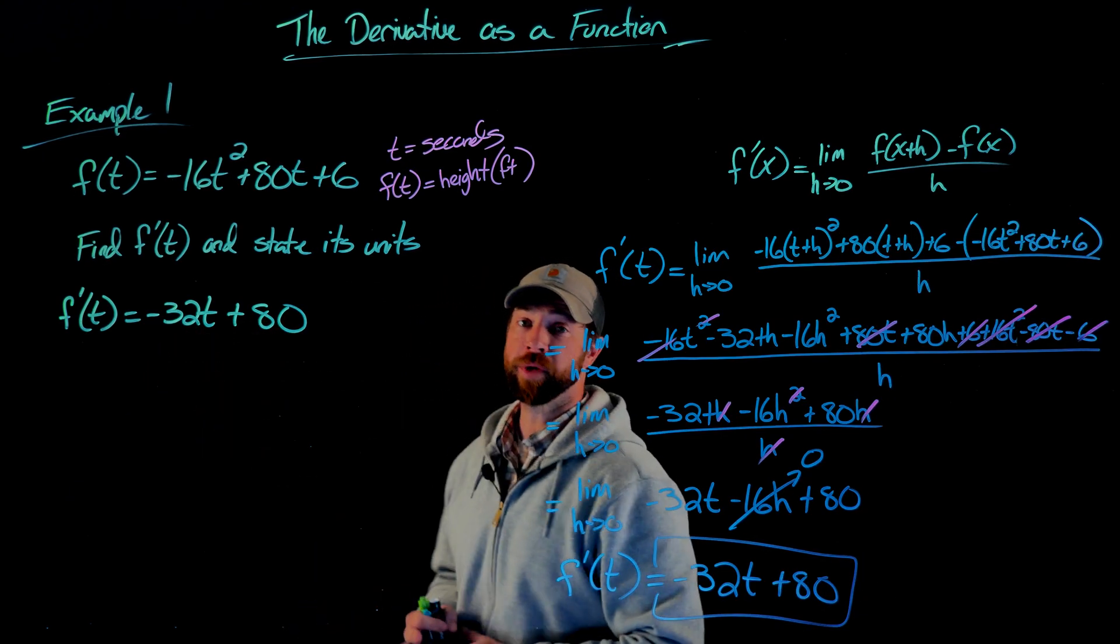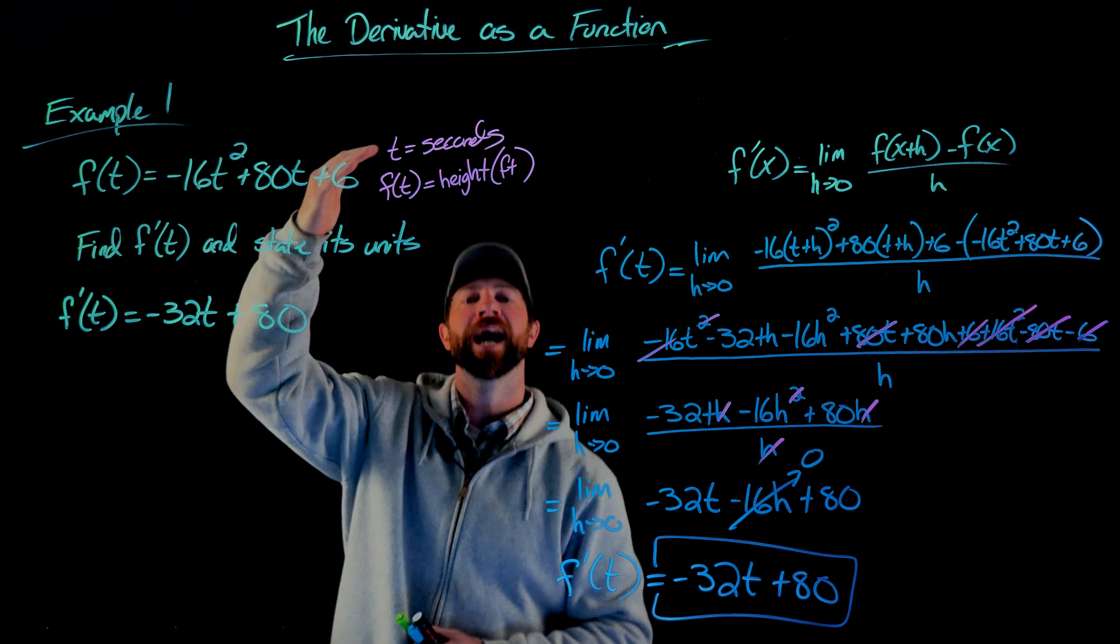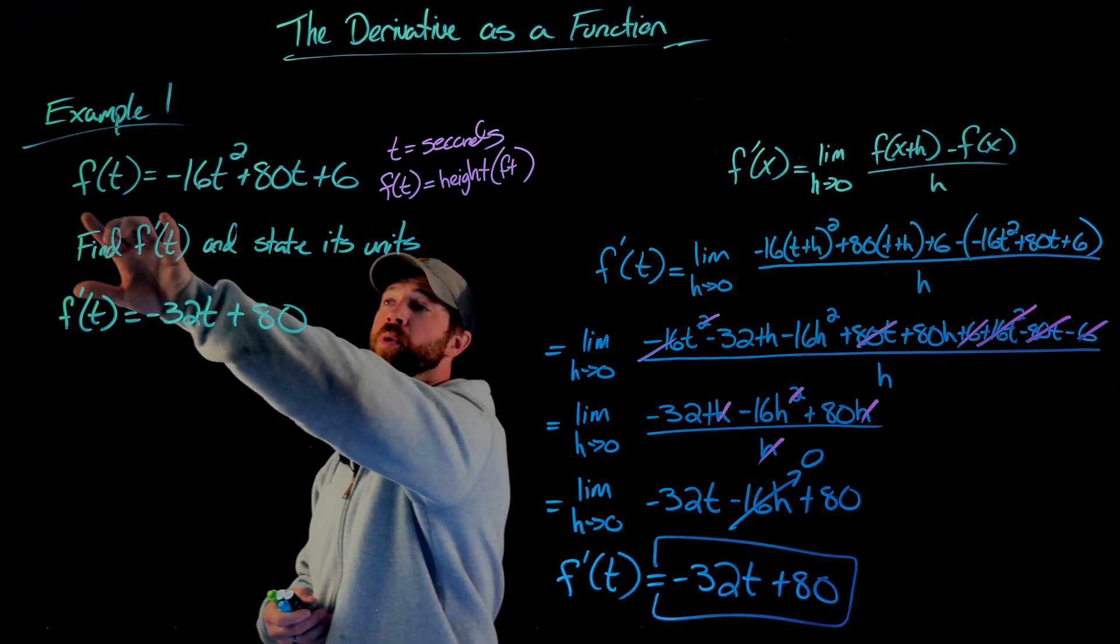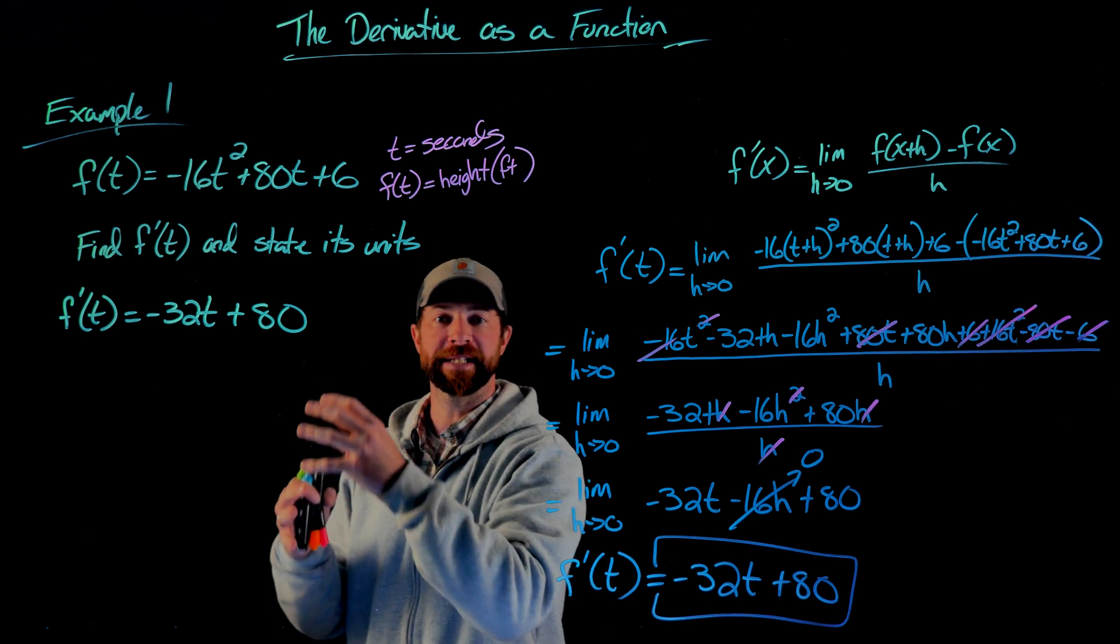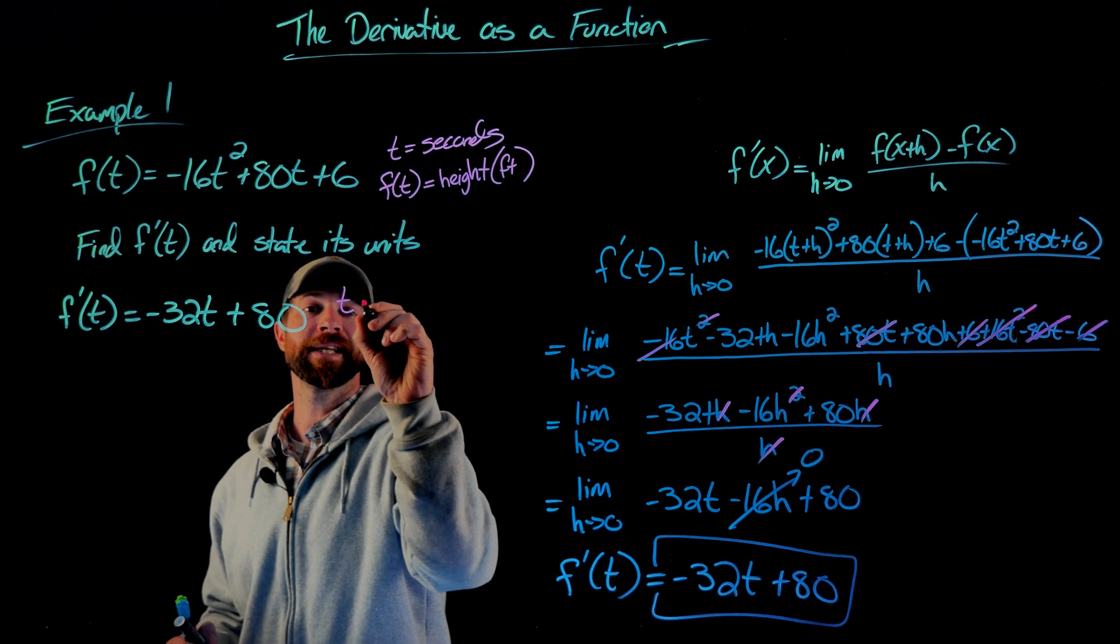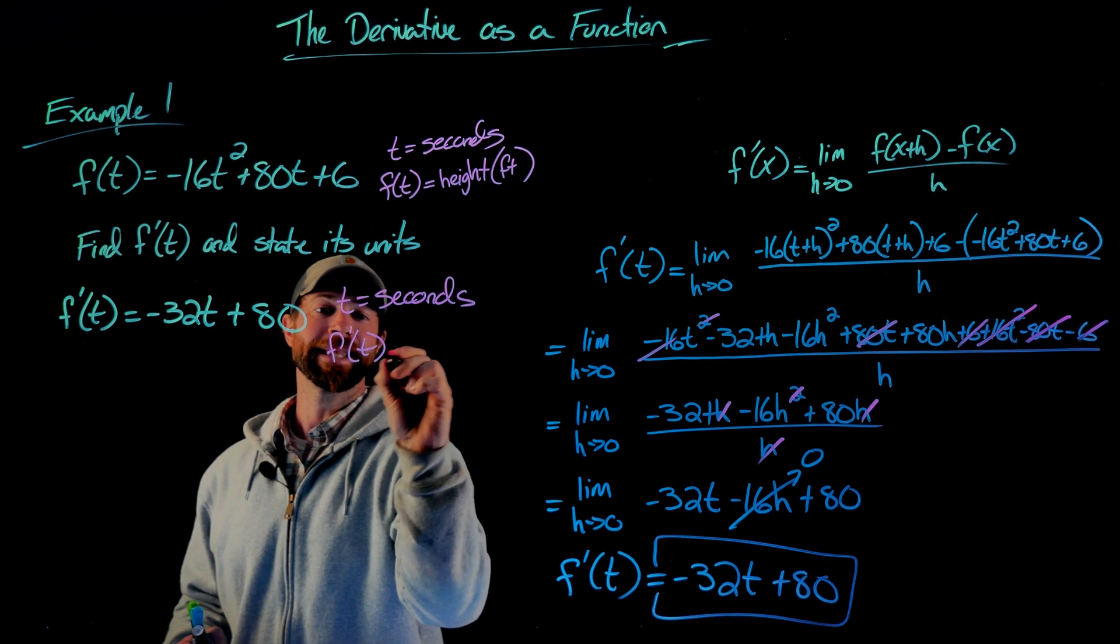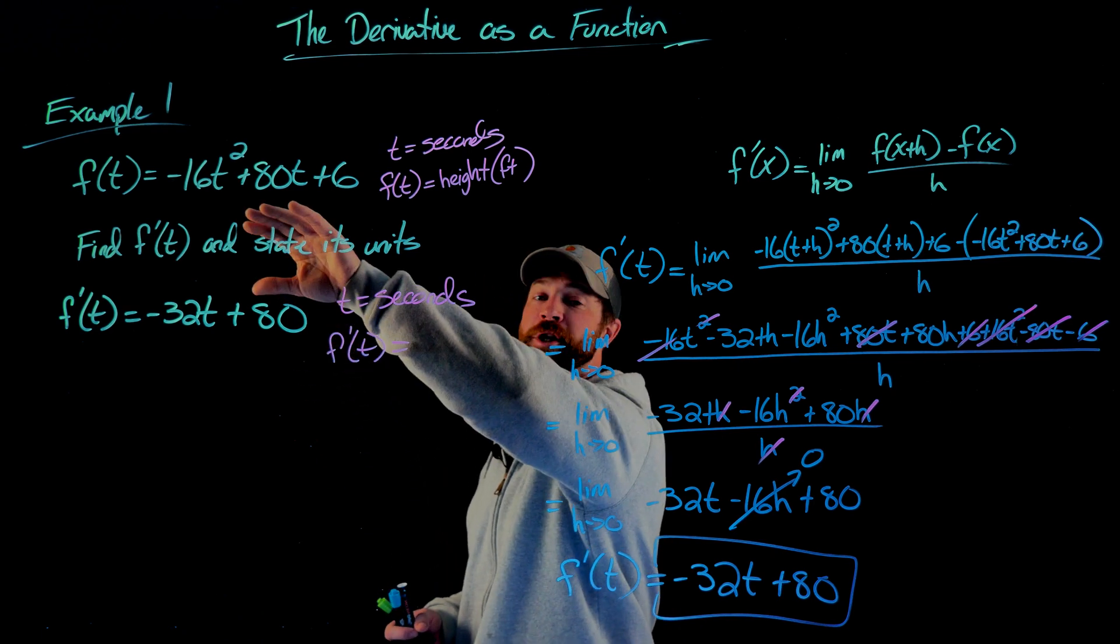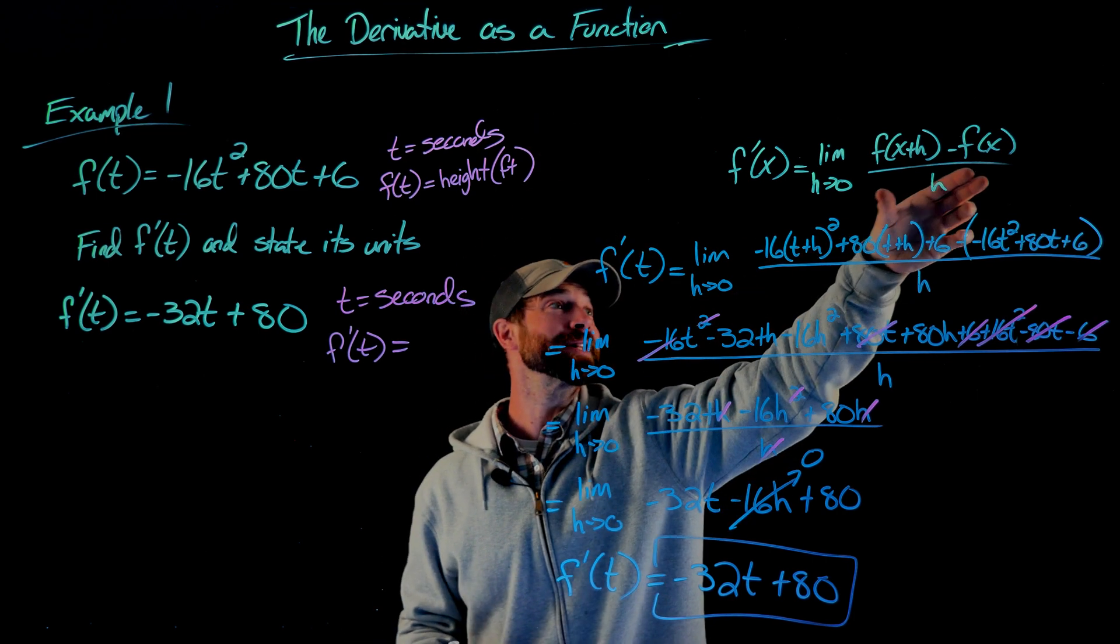All right then, we've found our first derivative of this function f of t. To remind you, f of t was this position function in which we inputted time and we got out vertical height in terms of feet. The question is, what is this function telling us? By the way, we always call these equations position functions because we input a time and we're given out a position, in this case a vertical height. This function right here has to always have the same input. So this t value right here is still in terms of seconds. The question is, what is the output of this derivative function? And that's always an easy question to answer. It is the rate of change of the original function. Or in other words, it's the ratio of the outputs to the inputs.